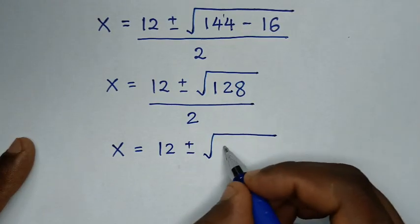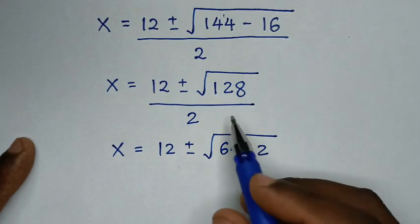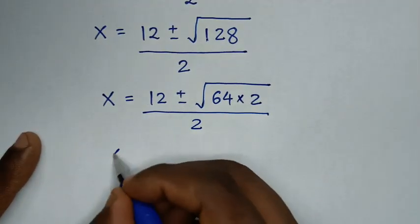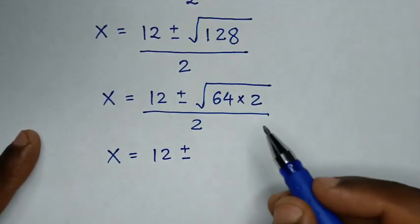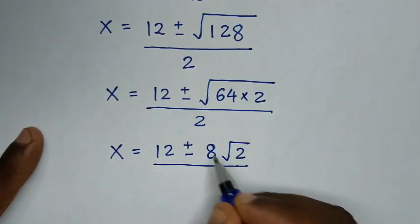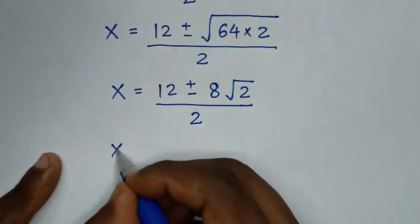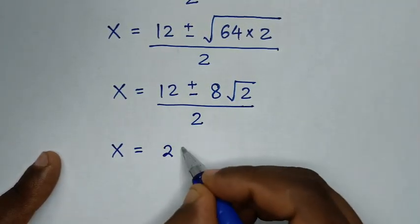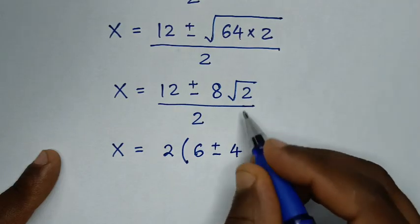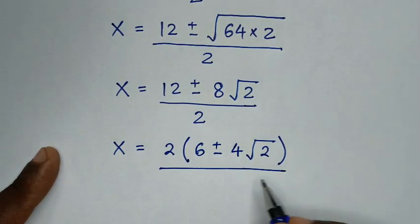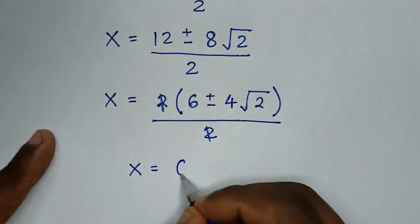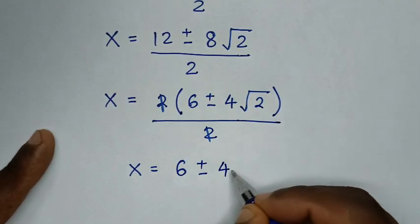Now, 128 = 64 × 2, so √128 = √64 · √2 = 8√2. Thus: x = (12 ± 8√2) / 2. We factor 2 from the numerator: (2(6 ± 4√2)) / 2, and the 2 cancels. So: x = 6 ± 4√2.